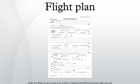For IFR flights, flight plans are used by air traffic control to initiate tracking and routing services. For VFR flights, their only purpose is to provide needed information should search and rescue operations be required, or for use by air traffic control when flying in a special flight rules area. Routing types used in flight planning are airway, nav-aid, and direct. A route may be composed of segments of different routing types.